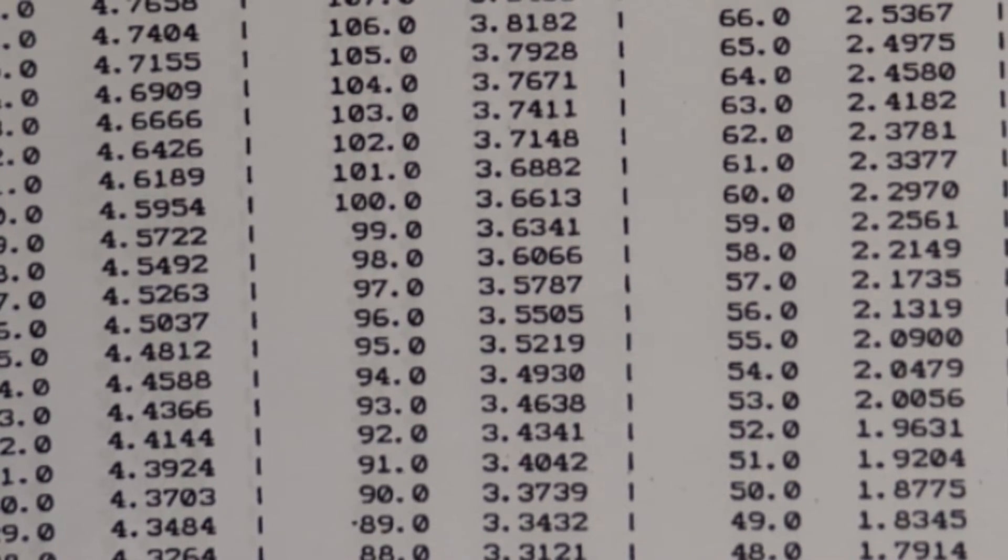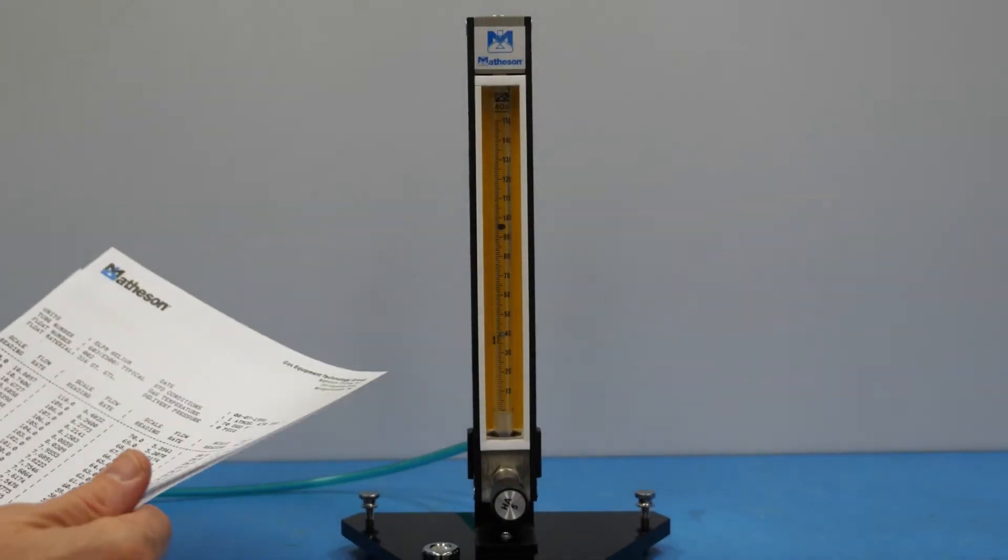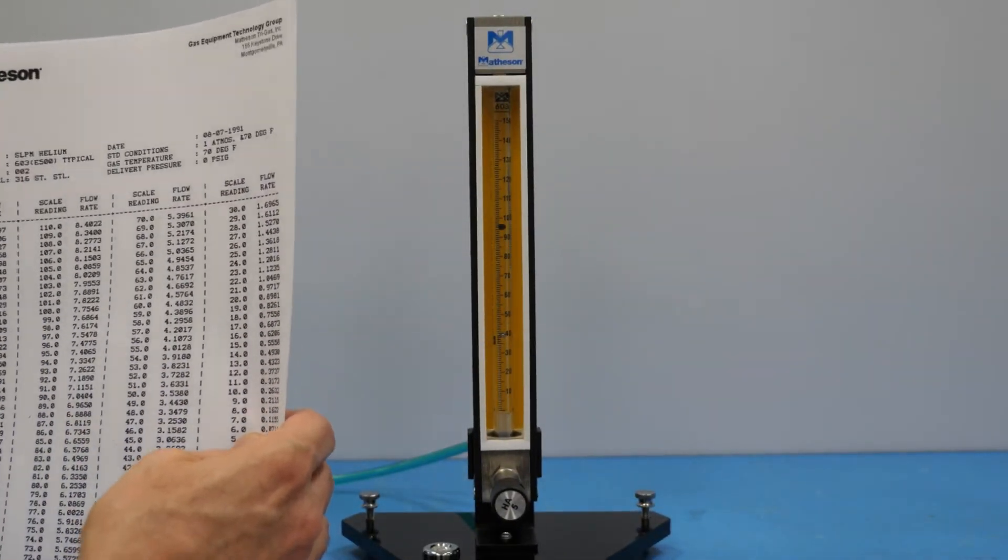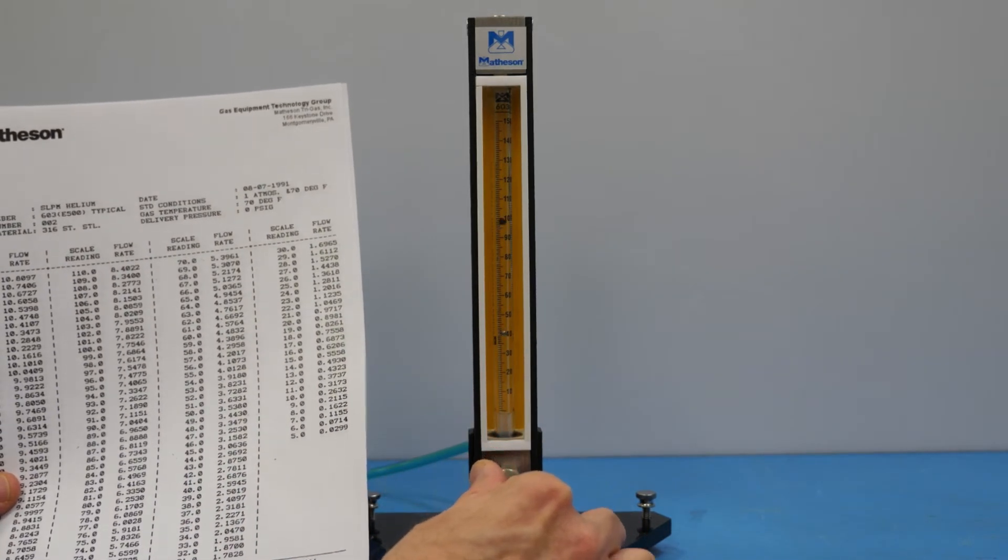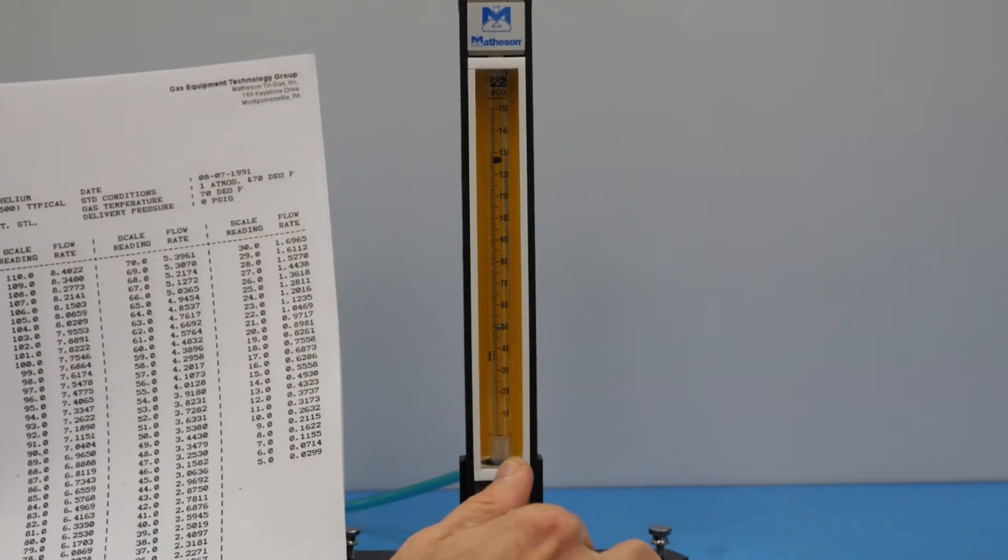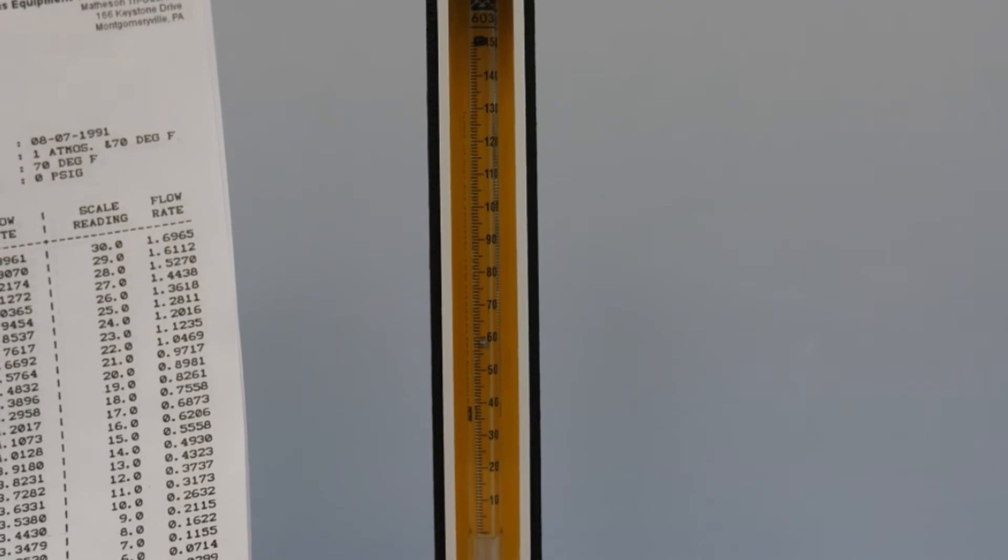At this point I'd like to demonstrate how you would read the stainless steel float. We begin to read the stainless steel float once the glass float has risen above the measurable range of the meter.